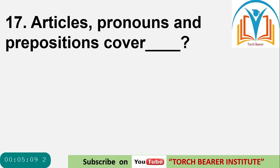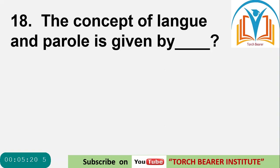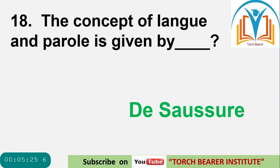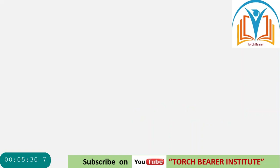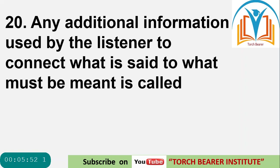Question 17: Articles, pronouns, and prepositions cover functional morphemes. Question 18: The concept of langue and parole is given by Saussure. Question 19: A variety of language developed for some practical purpose among groups of people who don't know each other's languages is called pidgin.